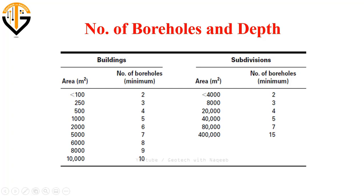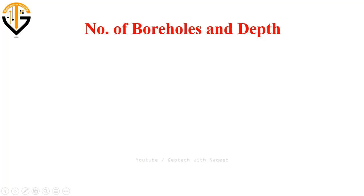Regarding the number of boreholes with respect to building area: if the area is less than 100 m², the minimum number of boreholes should be three. If the area is 1000 m², the minimum is five. If the area is 10,000 m², the minimum number of boreholes should be ten.